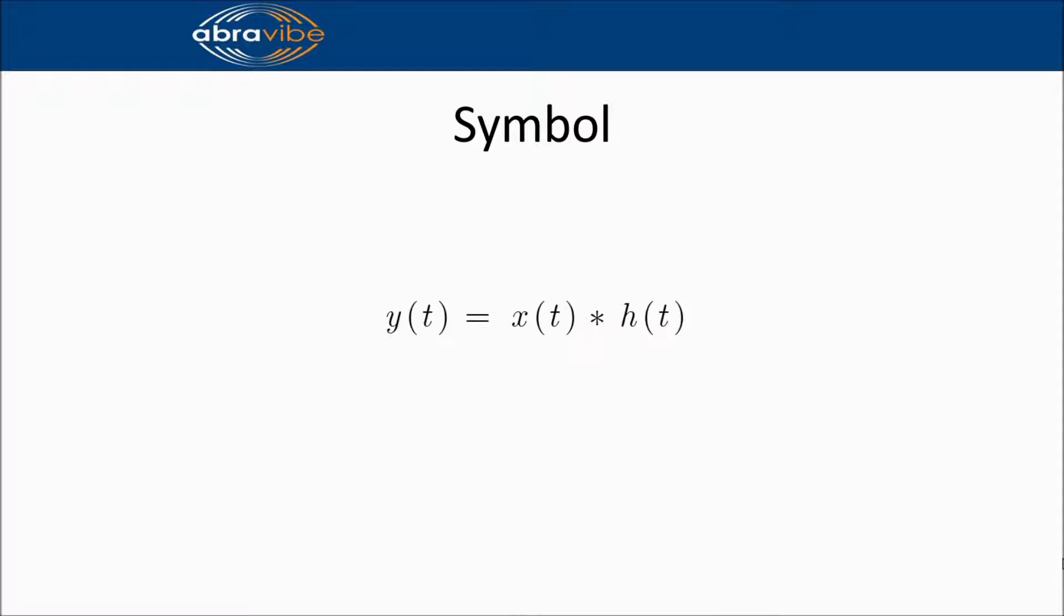We denote the convolution of two functions, here x and h, by an asterisk. The result of the convolution is a function, in this case y, which depends on the same variable as the two convoluted functions, in this case the time variable t.